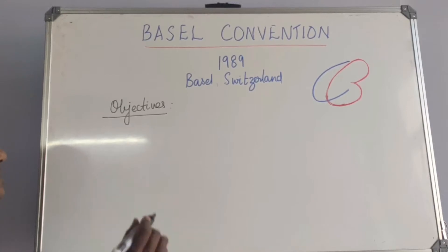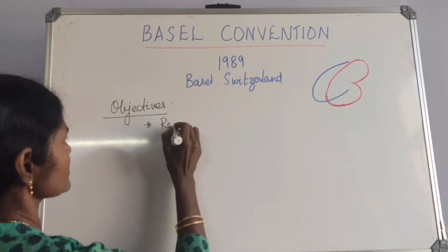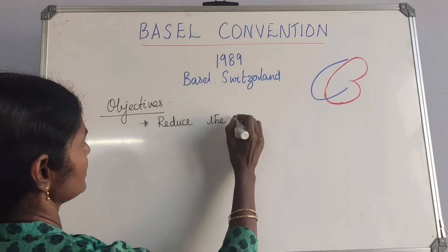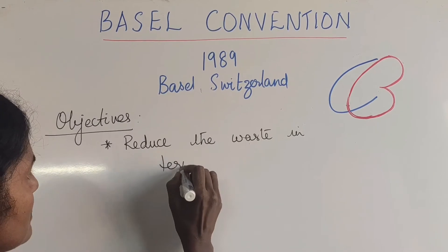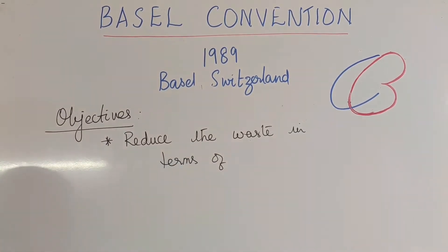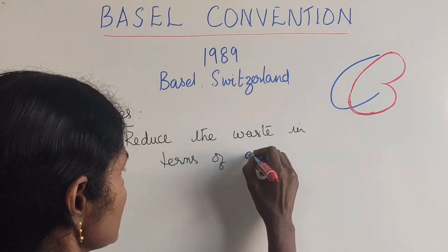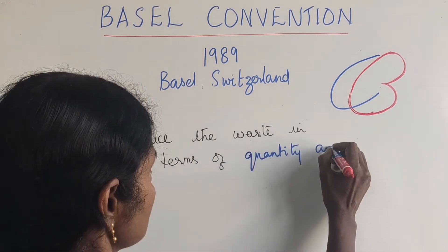Now let's move on to the objectives of the Basel Convention. The first objective is to reduce the waste in terms of two things — the waste can be bulky, or the waste can be very little but still hazardous. So it is in terms of quantity and hazardousness.